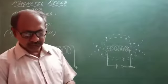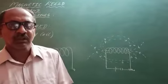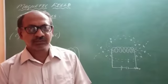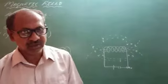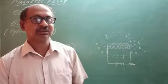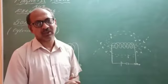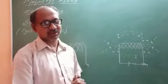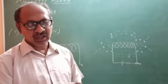In the last class you might have learned that when a conductor is carrying a current, around the conductor there is a magnetic field. If it is a straight conductor we have to apply the right-hand thumb rule, and if it is a loop also we can apply the right-hand thumb rule.